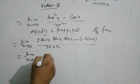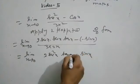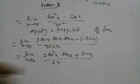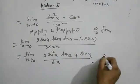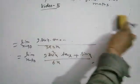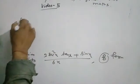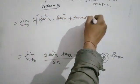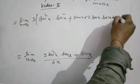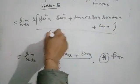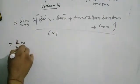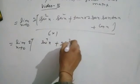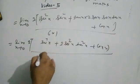After the second application, the limit x tends to 0 gives 2 sec²x · tan x + sin x upon 6x. Further differentiation of sec²x terms and cos x terms are carried out to resolve the remaining 0/0 indeterminate form and find the final answer.